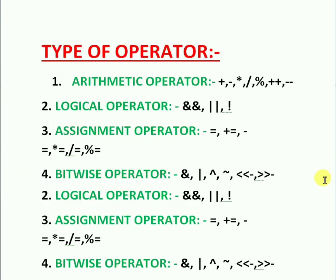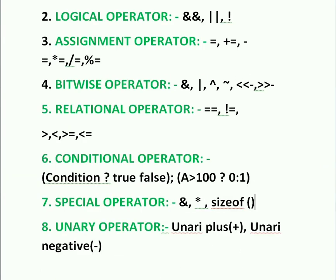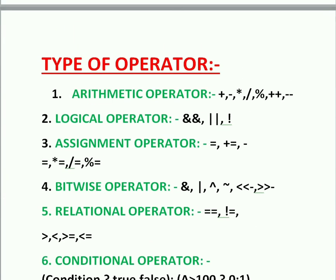To summarize: there are eight types of operators. Arithmetic operators are used to perform mathematical calculations like addition, subtraction, multiplication, division, and modulus. Logical operators are used to perform logical operations on given variables.